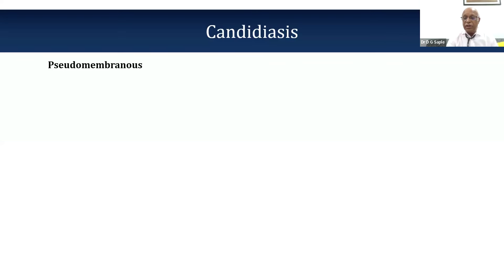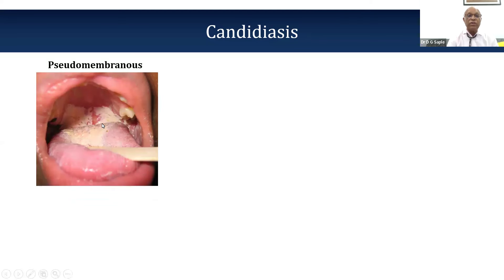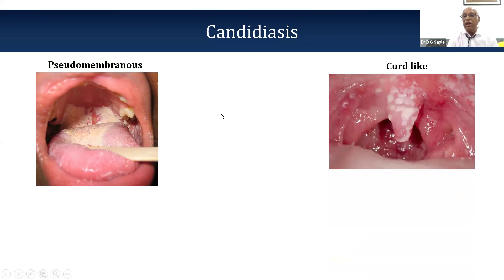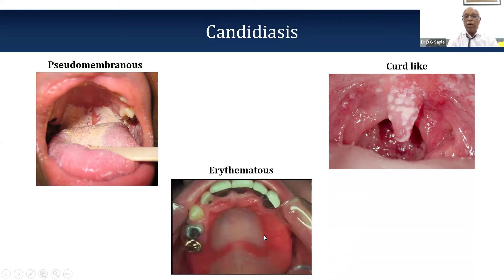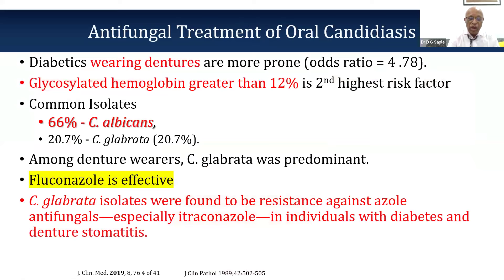When candida patients come to the clinic, they may present with pseudomembranous candidiasis — a membranous white layer. Sometimes they present with a curd-like white maceration, and sometimes just redness — erythema. These are the three varieties of oral candida infection seen clinically. Most commonly it is caused by C. albicans, but in 20% of cases it can be C. glabrata.